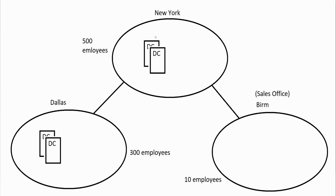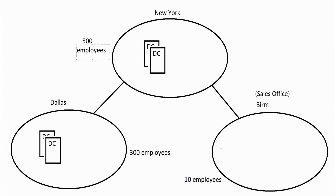This is where RODC becomes beneficial. New York and Dallas have full-time IT staff monitoring domain controllers and managing everything at all times. But the Birmingham office is a small office — not well monitored, no IT people managing things and keeping everything safe. So it's a bit more dangerous to put a full-blown domain controller there.